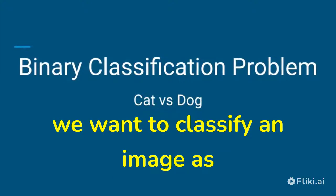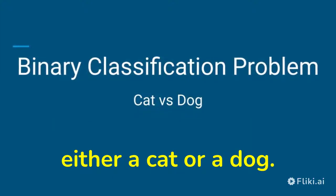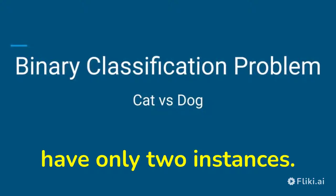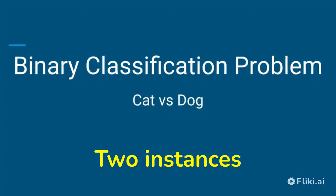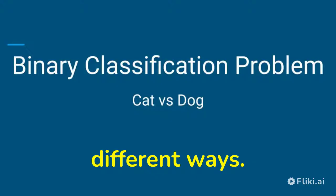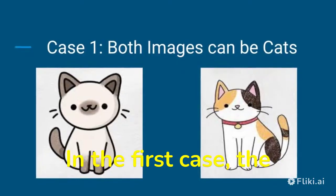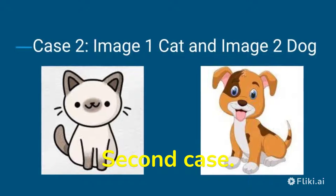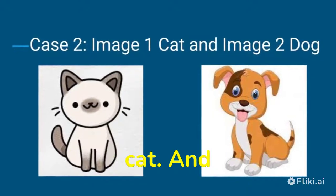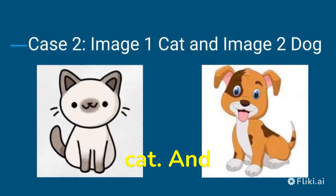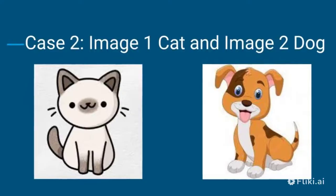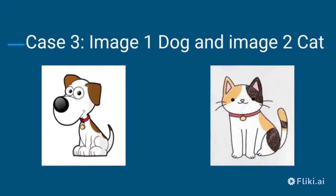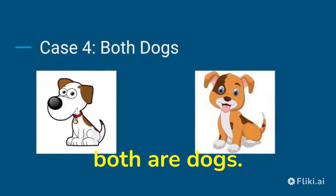For example, we want to classify an image as either a cat or a dog. Assume that we have only two instances. Two instances can be classified in four different ways. In the first case, both images can be cats. In the second case, image one is a cat and image two is a dog. In the third case, the first image is a dog and the second image is a cat. In the fourth case, both are dogs.